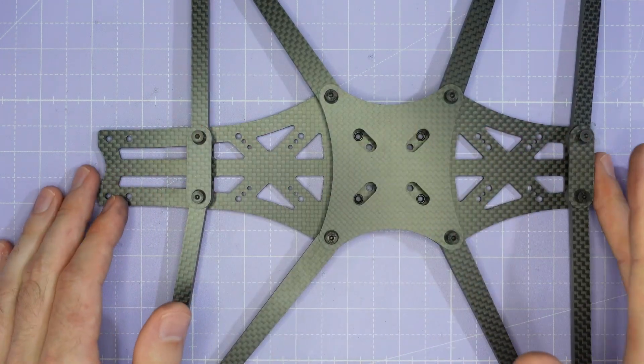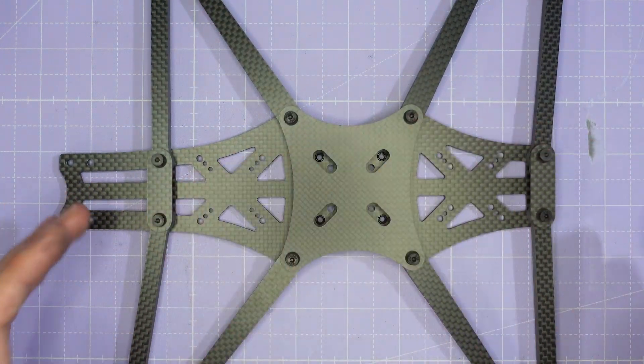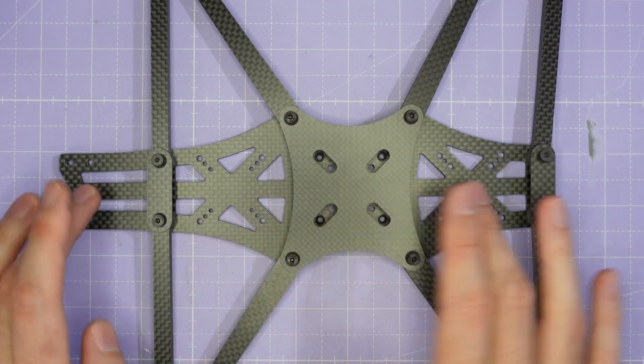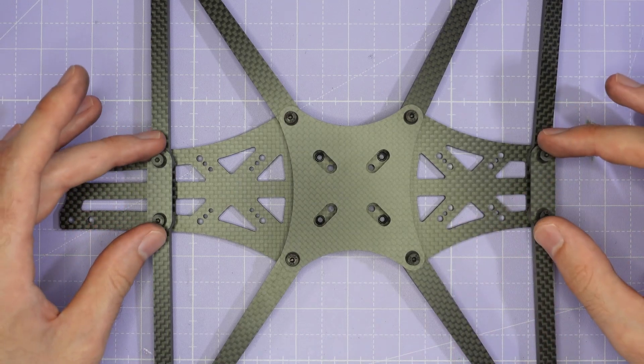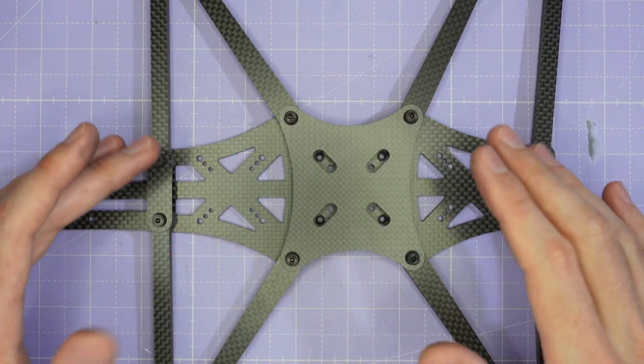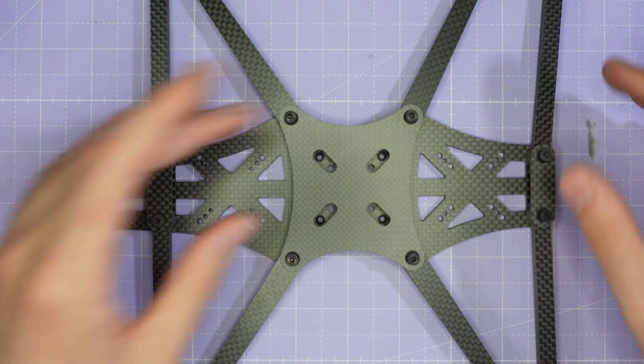Once you've tapped all the screws in just finger tight you can then use a driver and secure them nice and tightly. Because all the mountings are reinforced with M3 press nuts you're going to be able to tighten these arms down nice and tightly and get the frame really secure at this stage.